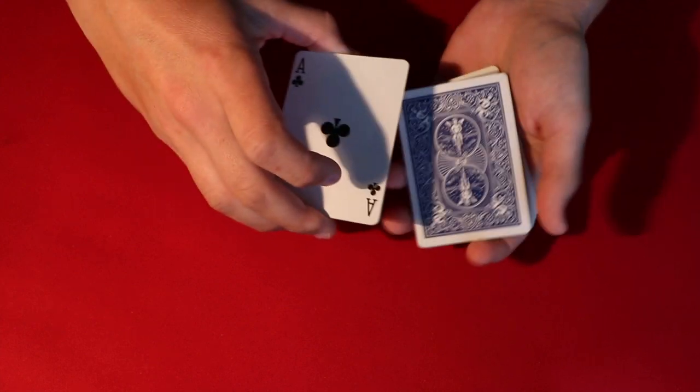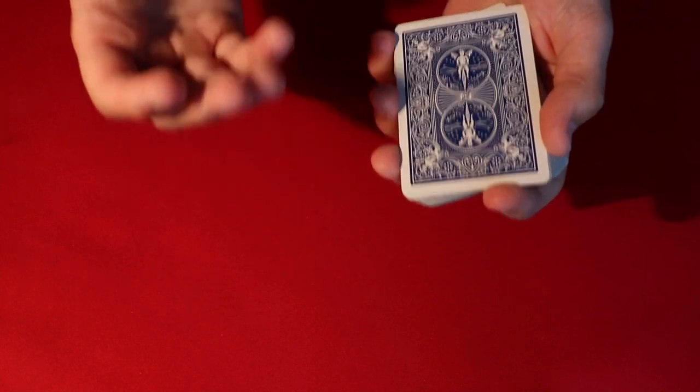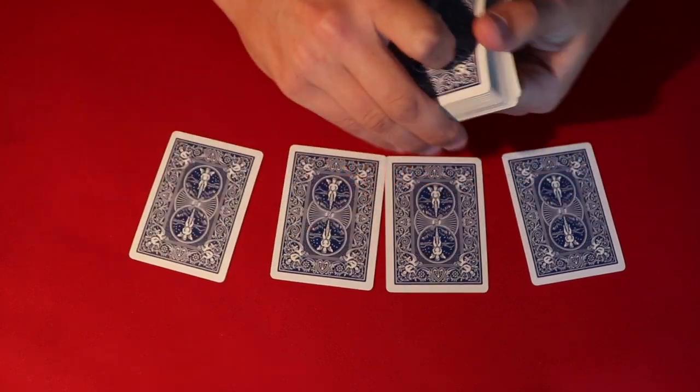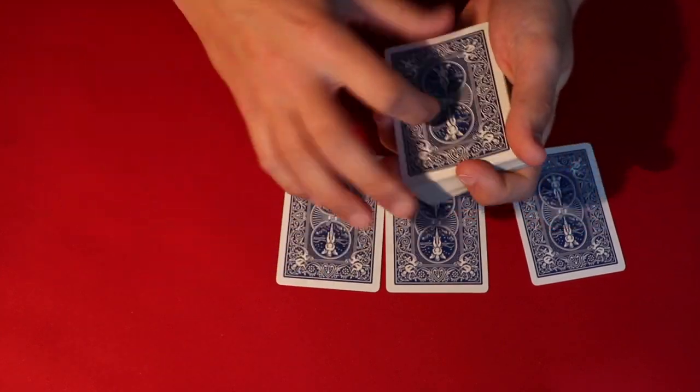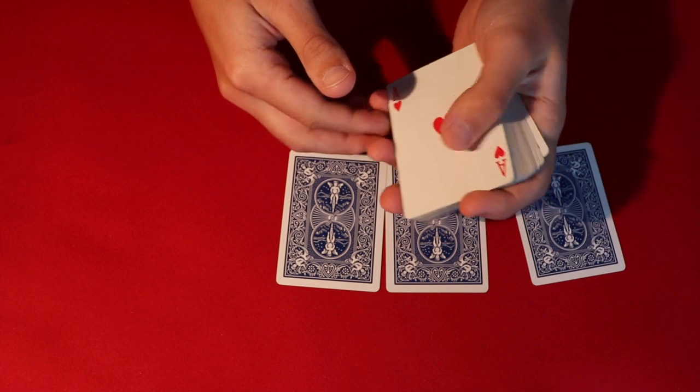So you're going to tell your spectators that you're going to take all the aces from the deck and you're going to layer them throughout the pack. I'll show you in a second. You're going to layer them throughout the pack so that you can actually take each ace. In this case let's start with the ace of hearts.